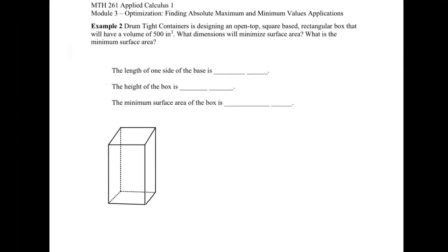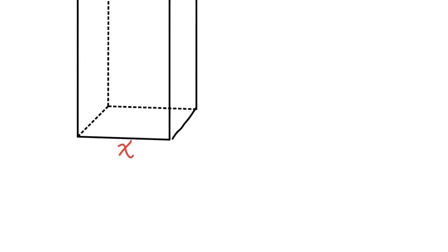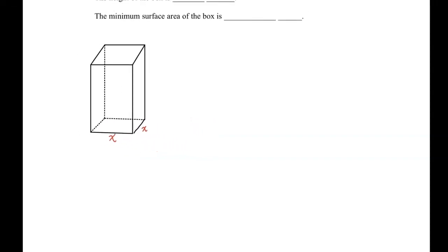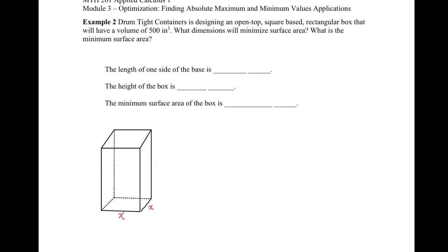We know this is a square on the bottom, so I'll put some dimensions here. I'll say x for the side length. Since it's a square, all sides are x — this side, this side, and that side are all x.